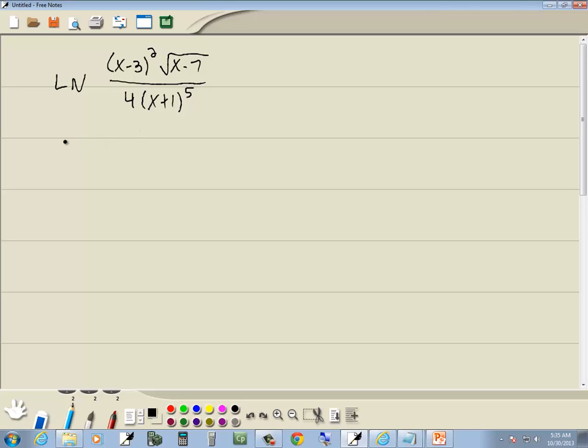Now to begin with, we can get rid of that square root. We can write it as x minus 7 to the 1 half power. Now where we get that from is whatever number is in the slot right here, that's your index. If there is no number, it's by default 2, and that's what goes down your denominator of this fraction. Then you put 1 up on top, and whatever is inside the radical comes straight down to the parentheses here.